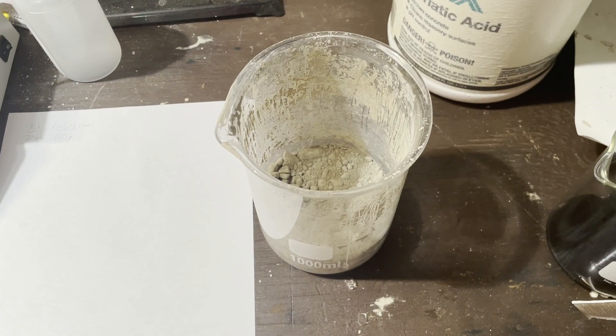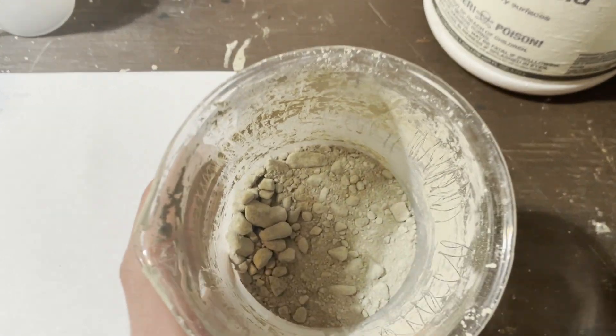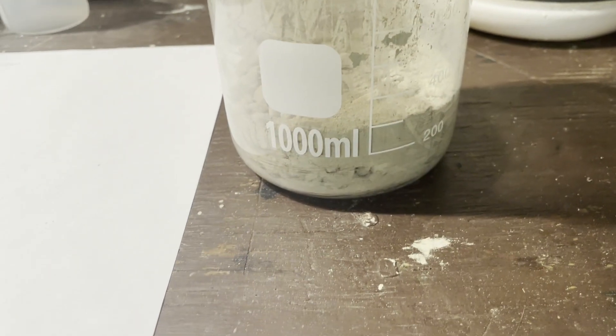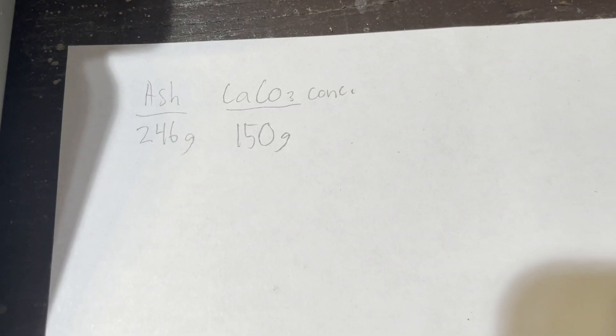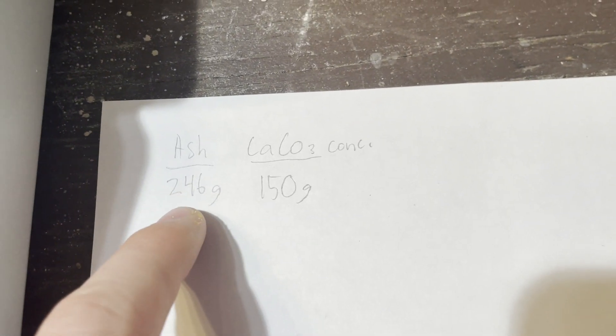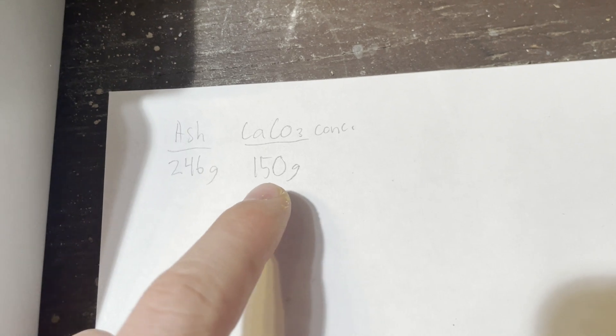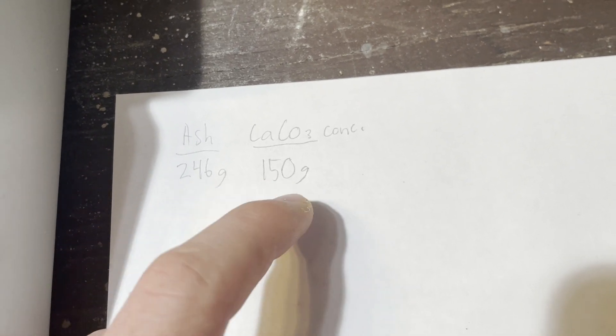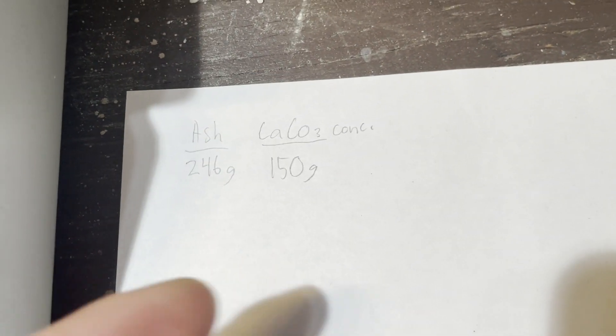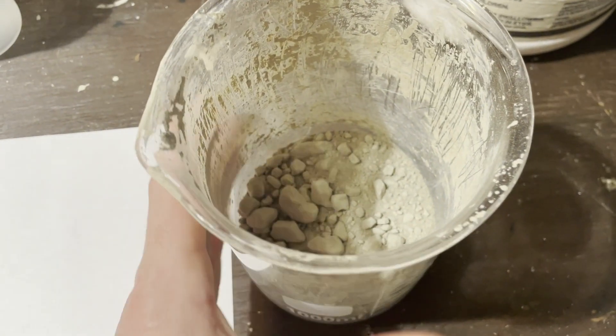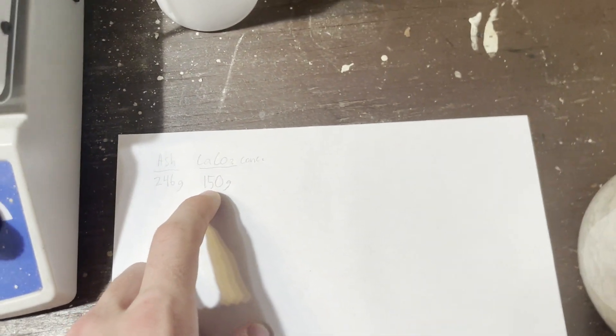Here is my calcium carbonate after I have washed and dried it. I weighed it, and I have around 150 grams, starting from 246 in just the ash and random sticks and stuff. There's definitely some gunk in there still.